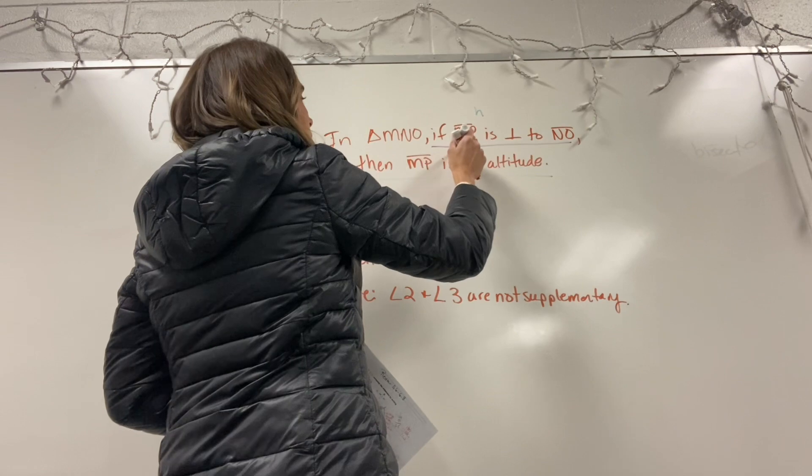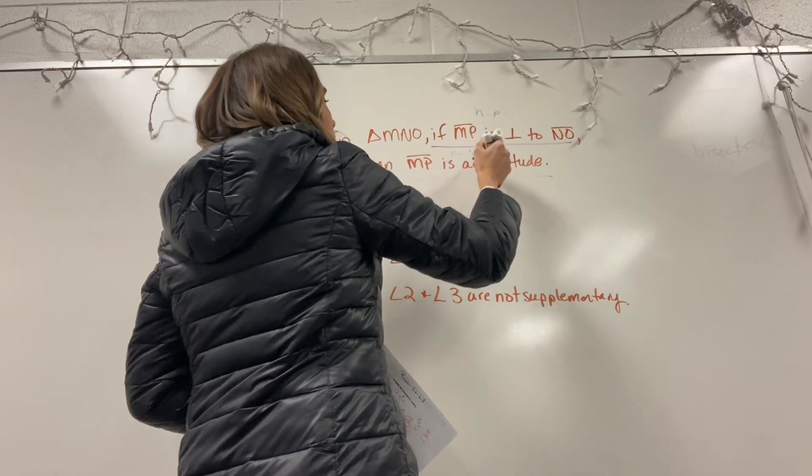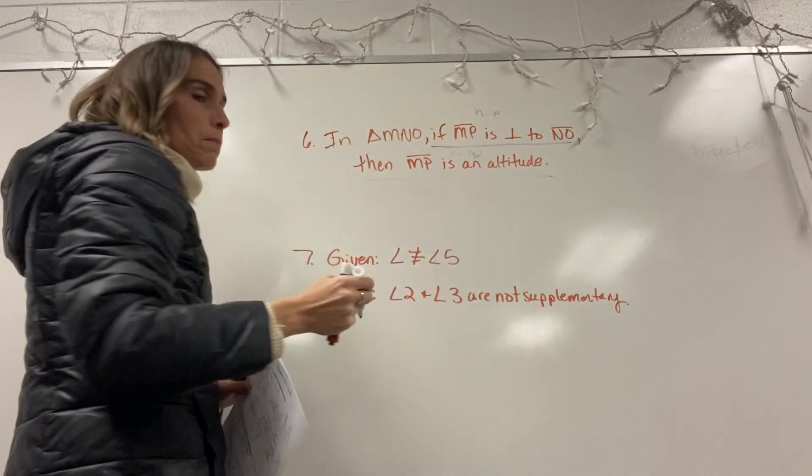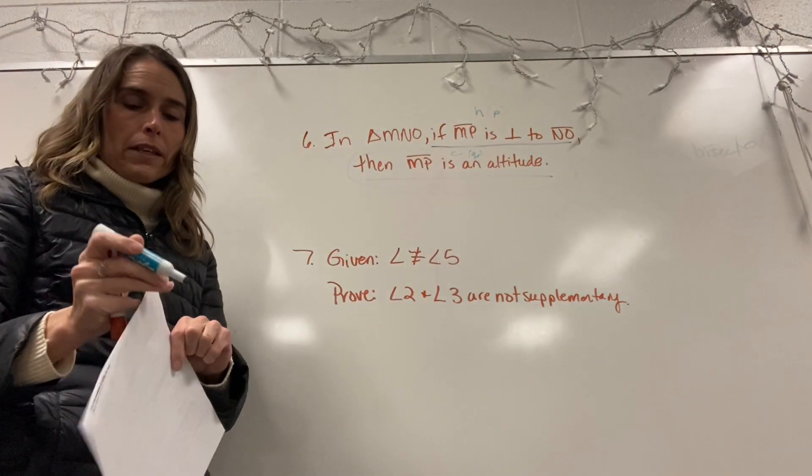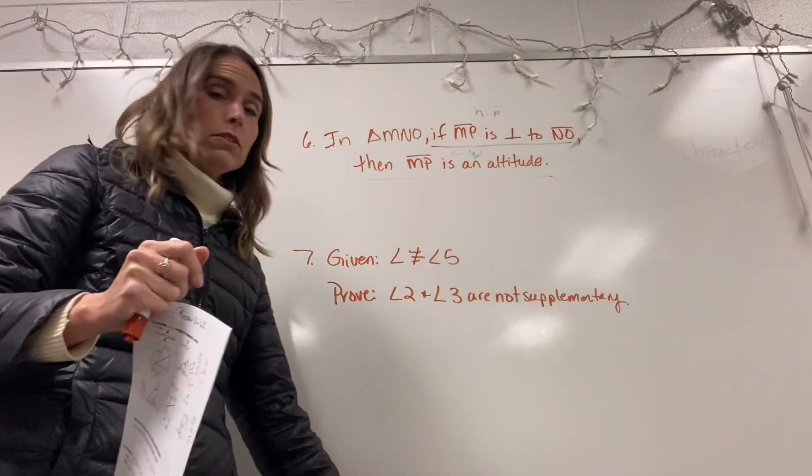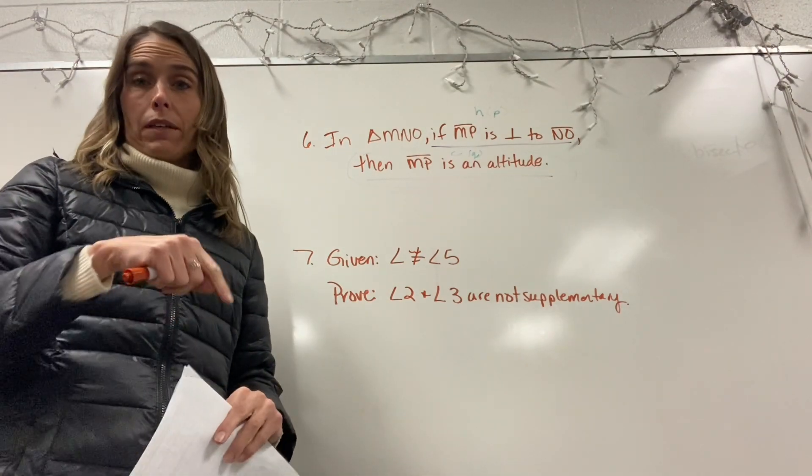Remember, this is your hypothesis, this is your conclusion. Remember, that's P, this is Q. So this right here, your conclusion, is what you're trying to prove. So when you're going to write the first statement of an indirect proof, you're going to take the conclusion and you're going to try to prove the opposite of the conclusion.